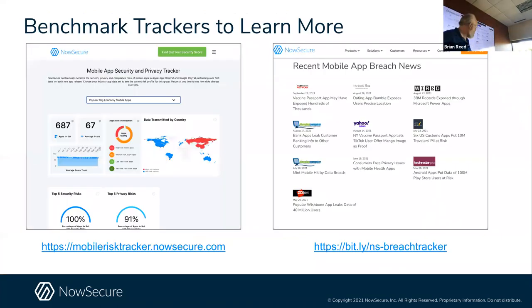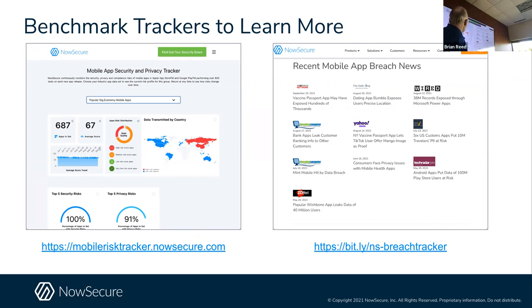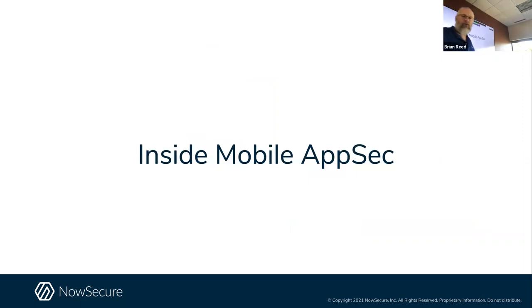We have some fun tools. If you're a masochist and you want to track breaches, we have a breach tracker page. If you want to get a sense of what's going on in the app stores, we have a mobile risk tracker — it's an anonymized aggregator of risk scores from commercial app stores. 100% of the apps we track fail one or more of the OWASP top 10. 91% of them leak private data somehow, somewhere that would concern somebody.